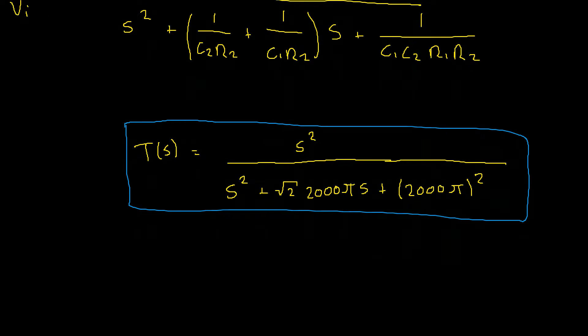For this one here we're going to firstly make the assumption that the capacitor C1 is equal to the capacitor C2 and they're both equal to 0.1 microfarad. Now if you're familiar with components this is pretty standard,